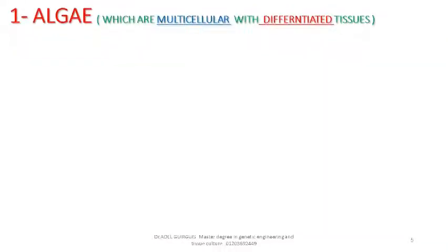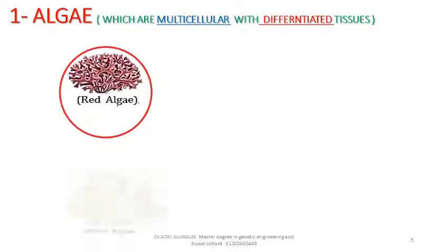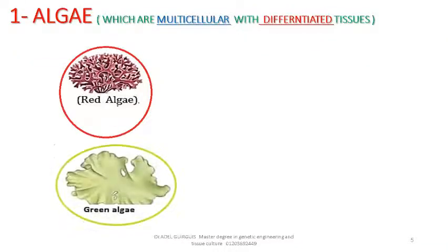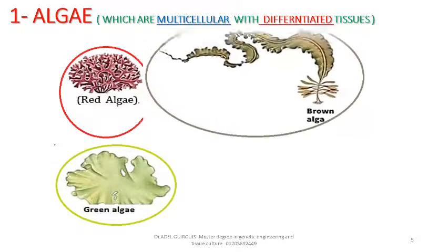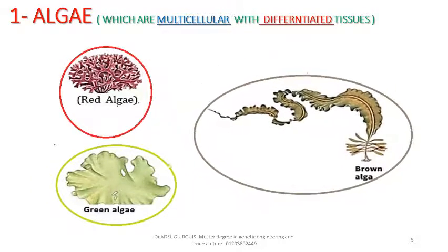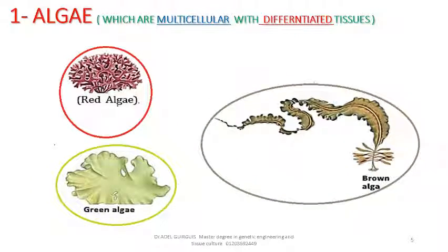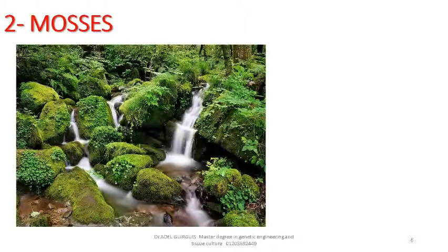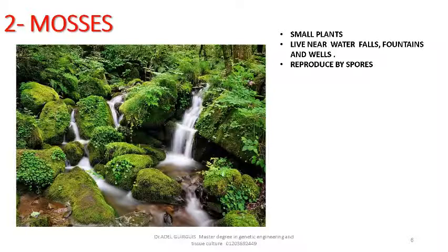Algae are multicellular with differentiated (specialized) tissues doing different jobs. Mosses are small, simple plants that live near waterfalls, fountains, and wells. They reproduce by spores.